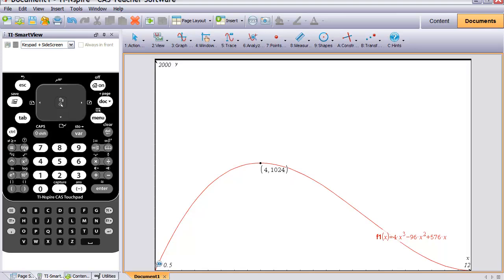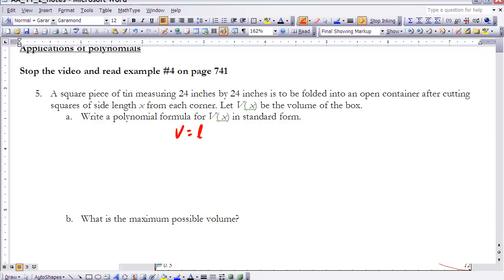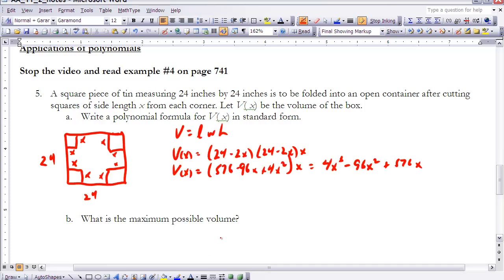So that would be the answer to our question. As we look at this, what is the maximum possible volume? That would occur when x is 4. So the V(4) is where we're going to get our maximum volume, which is going to be 1024. And that would be in terms of, we're working with inches, so it would be 1024 cubic inches for that value.